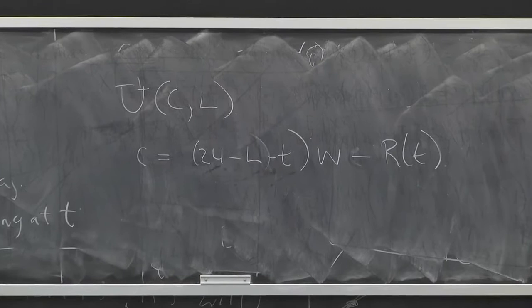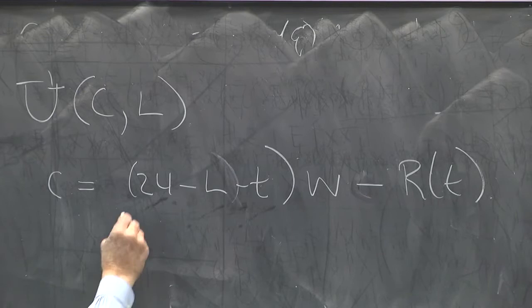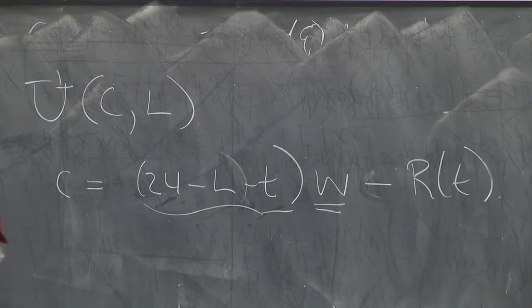Times W minus R of T. That's how much I get to consume. I get to consume my hours worked times my wage minus however much I pay in rent. That's what I have left to consume on this other good.